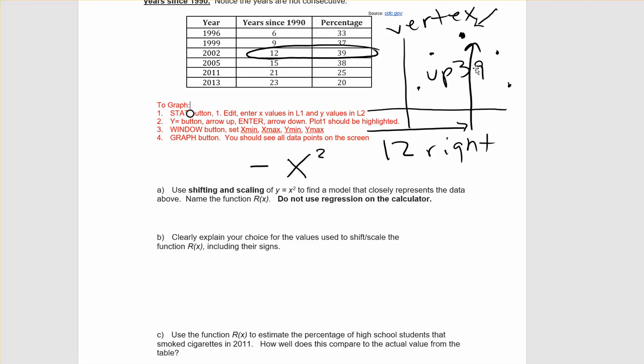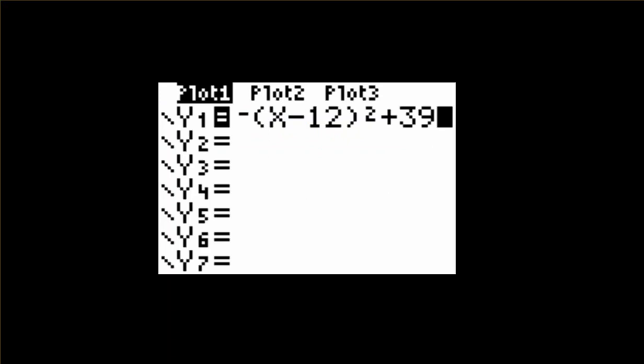So initially, our quadratic function will look like this. Remember that putting X minus 12 inside of our square function is going to shift us to the right 12, plus 39 outside of our function is going to shift us up 39. Hitting graph, we should see something like this.